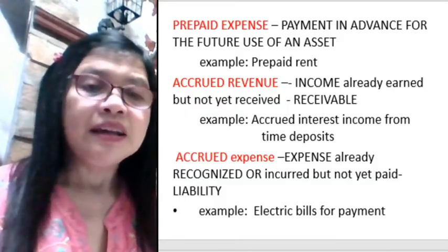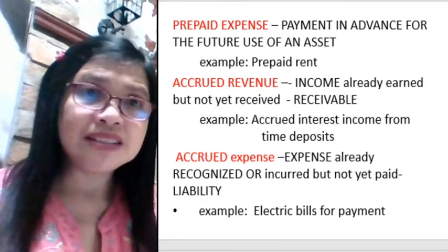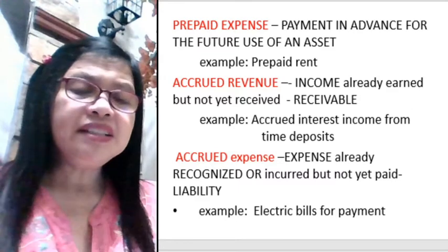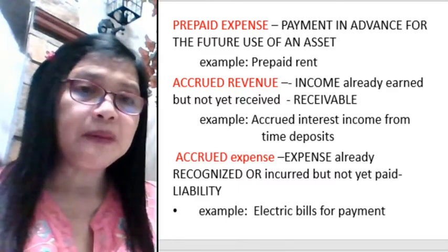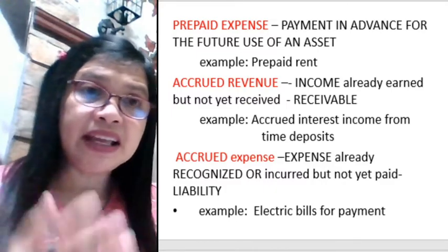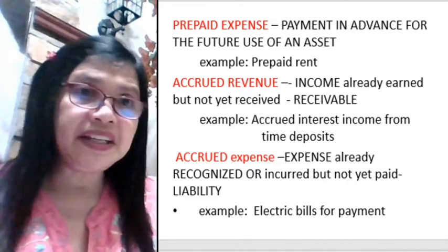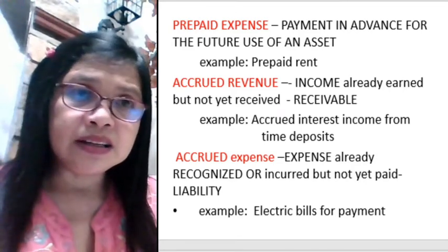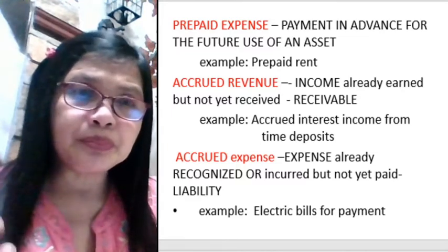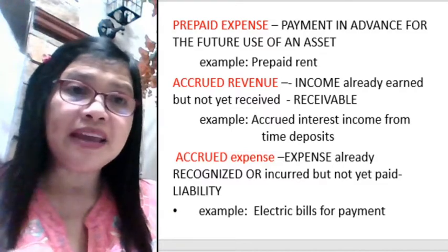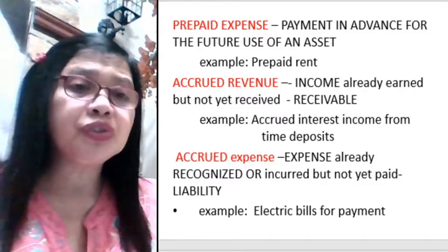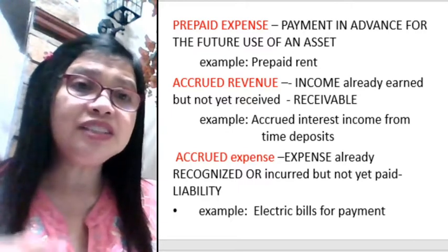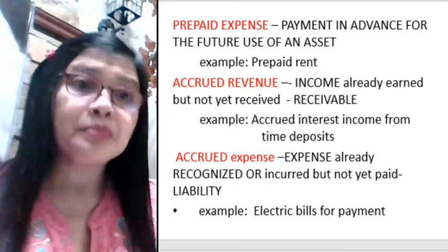Prepaid expense is payment in advance for the future use of an asset. A very good example is prepaid rent. For instance, a company wanting to open a business needs a building or office space and has to rent. The procedure today requires you to pay not only for one month but maybe two, three, six, or even a year in advance. That is what you call a prepaid asset or prepaid expense.